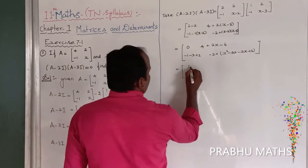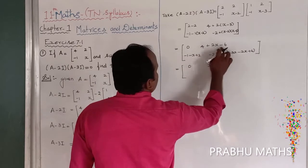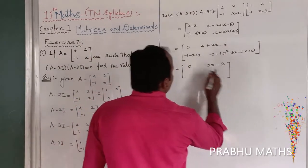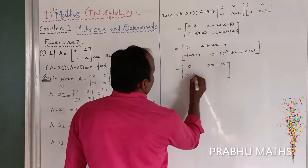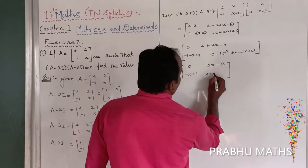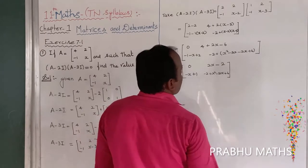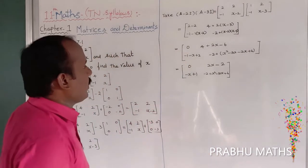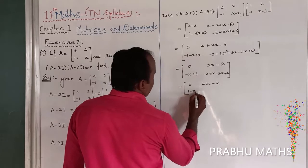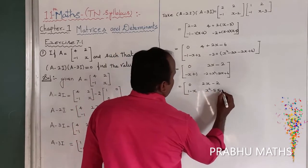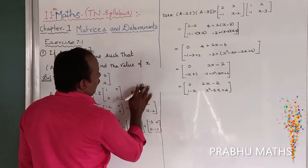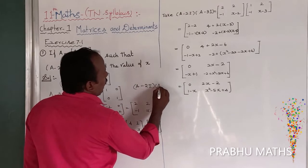So that equals: the first entry is 0; the second entry is 2x minus 2; minus 2 plus (x squared minus 5x plus 6), which simplifies to x squared minus 5x plus 4. This is the answer of A minus 2I into A minus 3I.